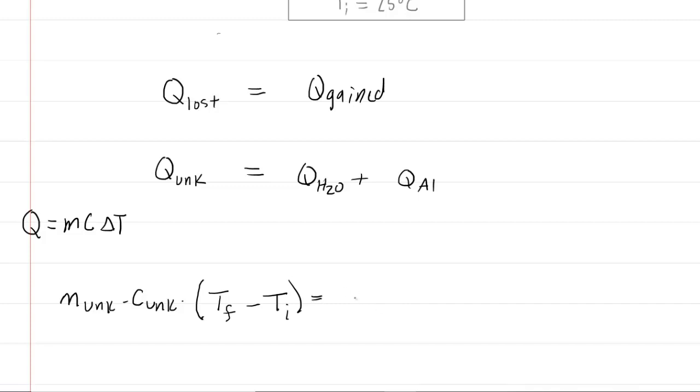On the other hand, we're going to have something similar. We're going to have the mass of the water multiplied by the specific heat of water, and then again multiplied by the temperature change, final temperature minus initial temperature. And then same thing for the aluminum.